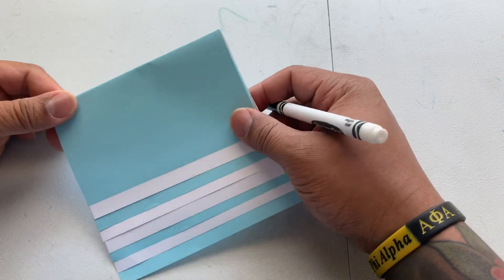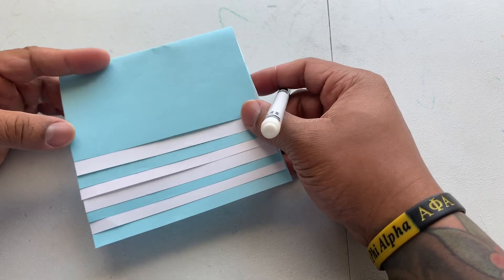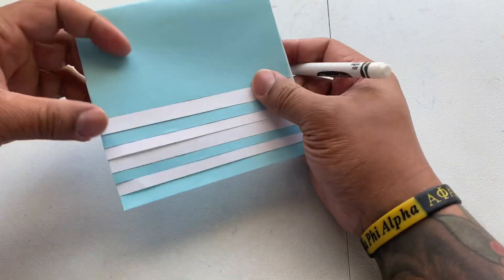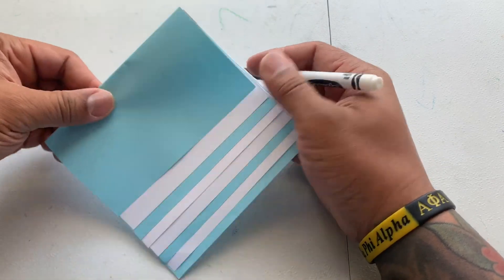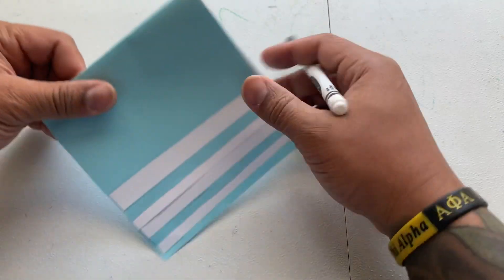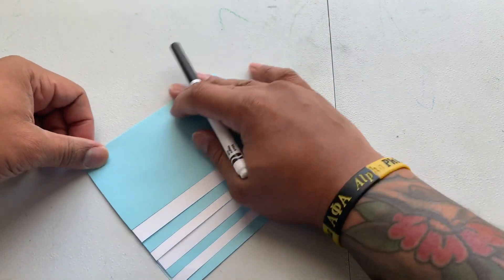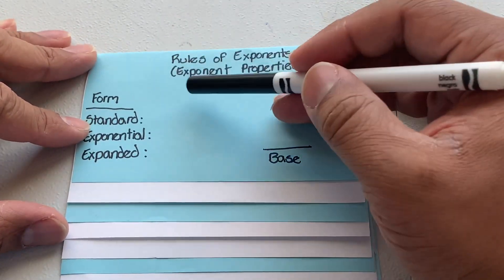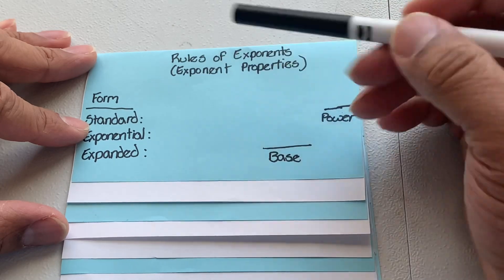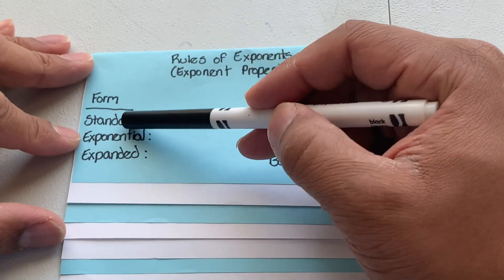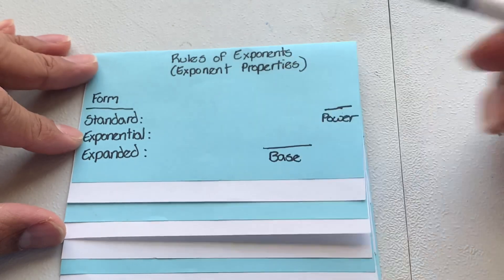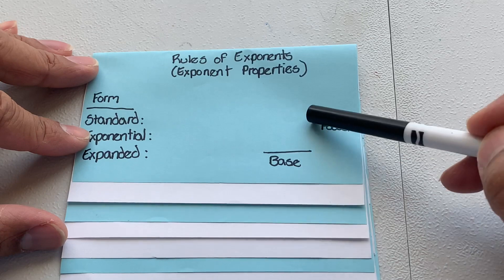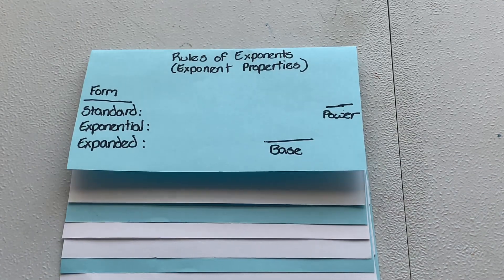What we're making is a flip book with rules of exponents. Each tab is going to be a different rule of exponents. You're gonna need your black marker. The title is 'Rules of Exponents' — and in parentheses put 'Exponent Properties.' There are different forms: standard, exponential, and expanded. Over to the side, put 'base' with a little line on top, and 'power' with a line on top. Pause the video now and copy this.